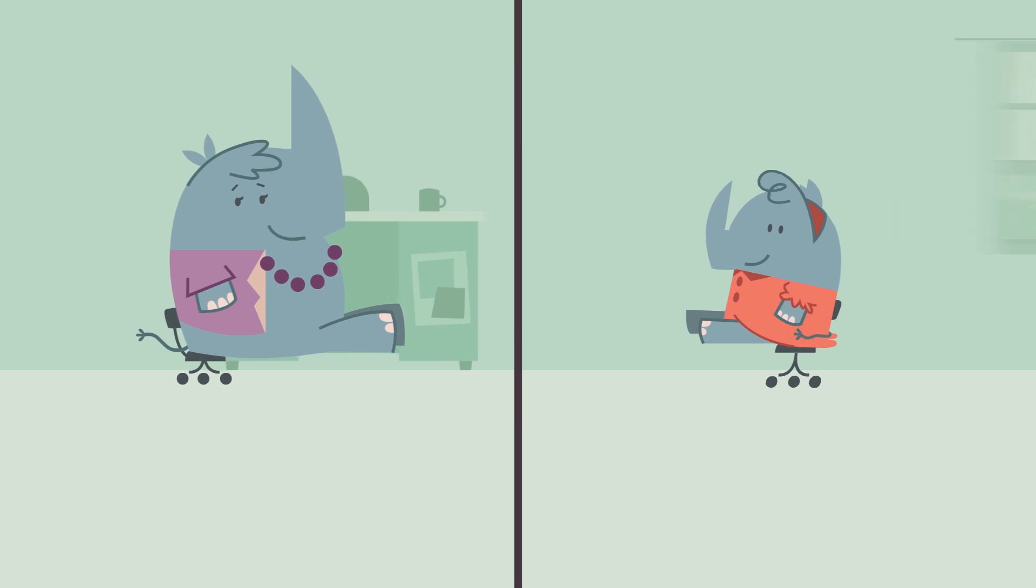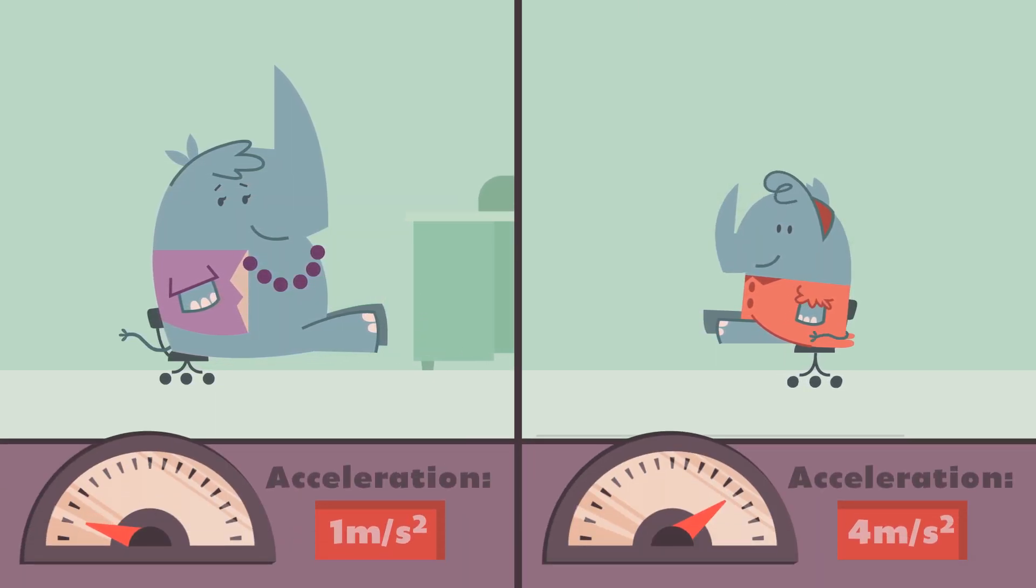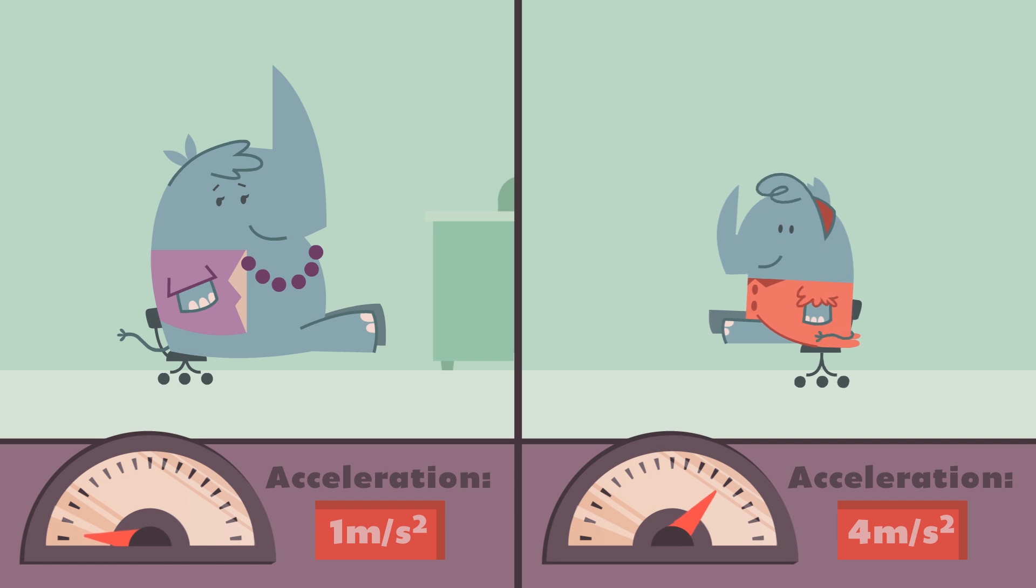Notice how the student goes back much farther and faster than the teacher. The teacher accelerates less, since she is the more massive of the two objects, and it takes more force to accelerate her than it does the student.